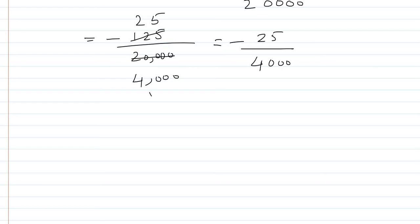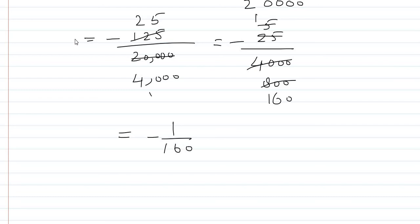We continue simplifying minus 25 over 4000. Dividing by 5 again: 25 ÷ 5 = 5, 4000 ÷ 5 = 800. Then 5 ÷ 5 = 1, 800 ÷ 5 = 160. So the final lowest form is minus 1 over 160, which is the answer.